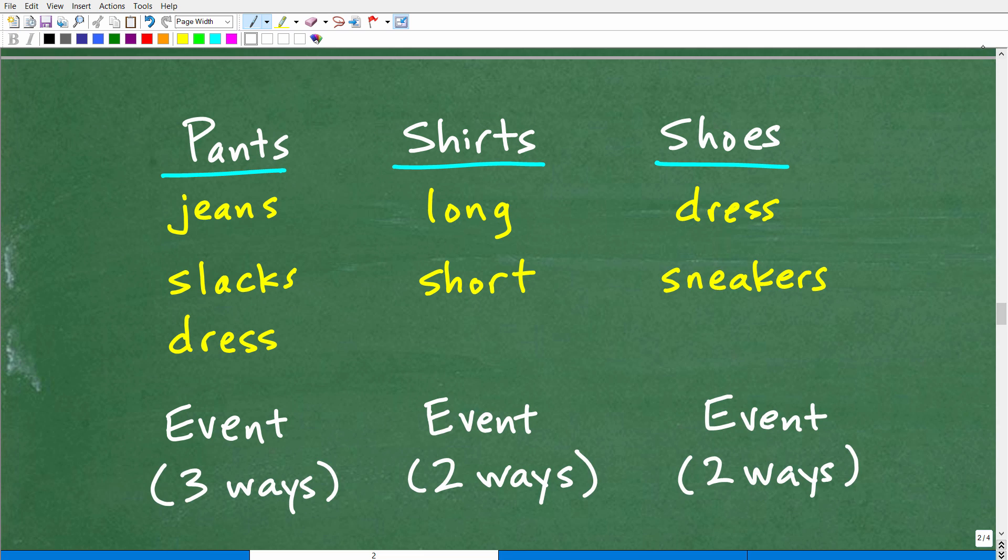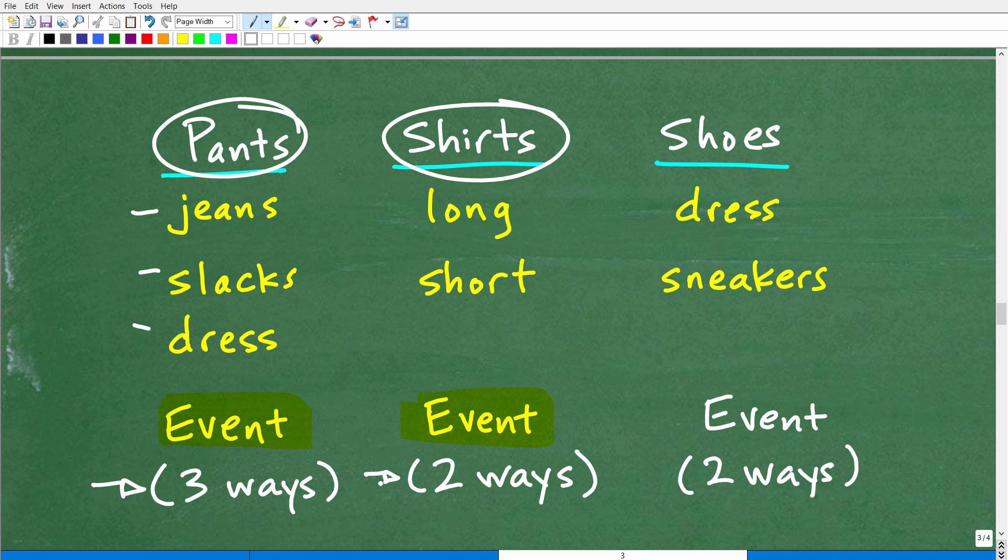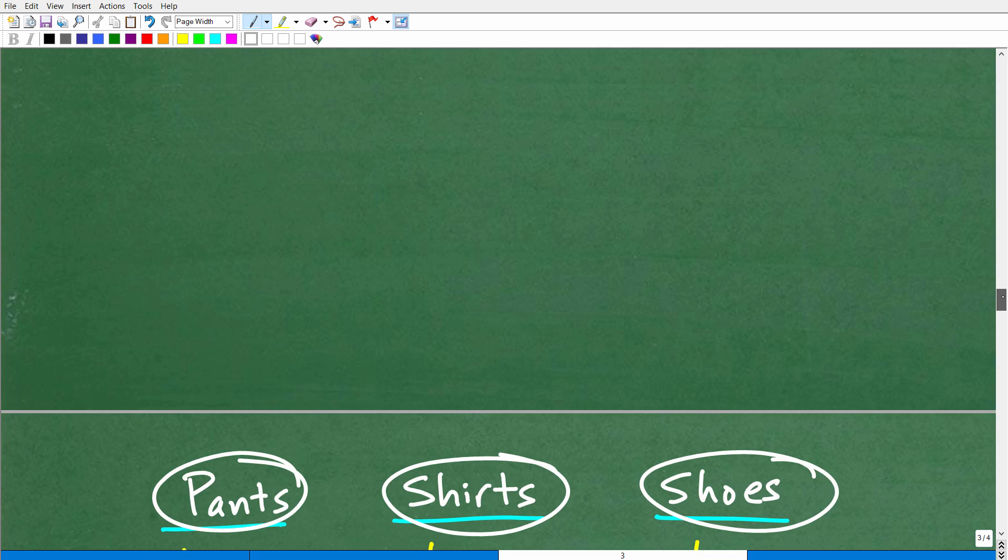So here it is. It says if one event can occur in M ways and another event can occur in N ways, then the number of ways that both events can occur is equal to M times N. This is very kind of technical in its description, but basically this is what it means. We have three events here. We need to look at pants, shirts, and shoes as three separate events. Event one is you going to your closet and grabbing one pair of pants. How many different ways can that event happen? The number of ways that event can happen is three ways. How about our shirts? This is our second event. That event can happen only in two ways. And then shoes, that separate event can happen in two ways.